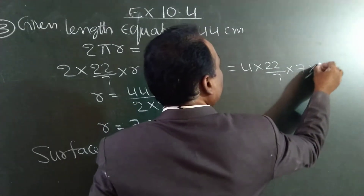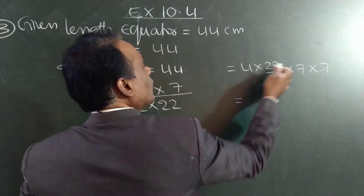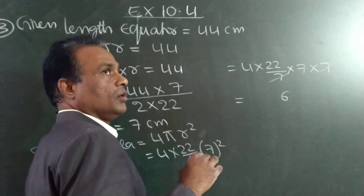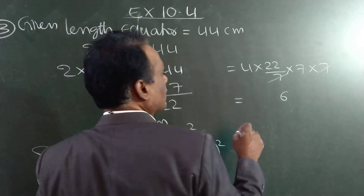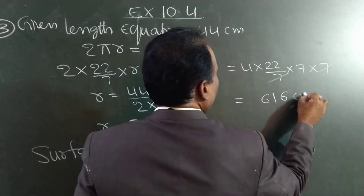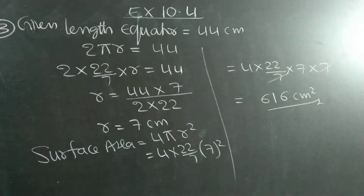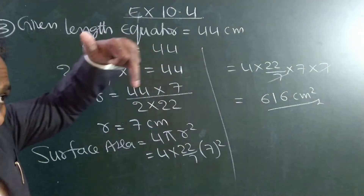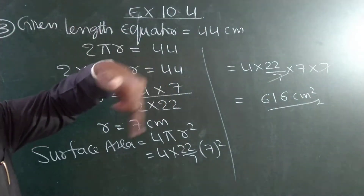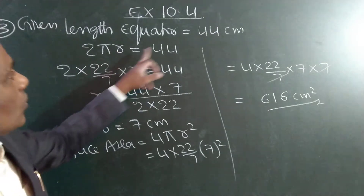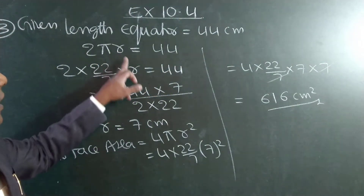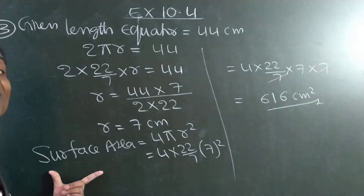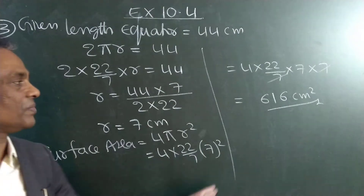So 4 × (22/7) × 7². The 7 in the denominator and 7 from r cancel. We get 4 × 22 = 88, and 88 × 7 = 616. So the surface area is 616 cm². This is the answer. Equator means it is not the diameter of this globe — it is the round circumference, that is the perimeter of the globe. 2πr is given as 44, giving r = 7 cm. Surface area formula 4πr² with r = 7 gives the simplification 616 cm².